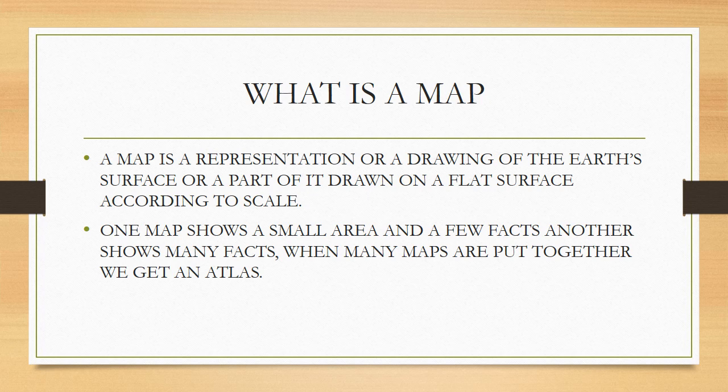One map shows a small area and few facts, another shows many facts. For example, one map may show small places, districts, rivers, oceans, seas, and mountains. But another map will show each and every thing in our state, like railway crossings, bus stands, railway stations and so on. And if all these maps are put together, it is called an Atlas.